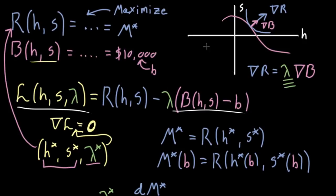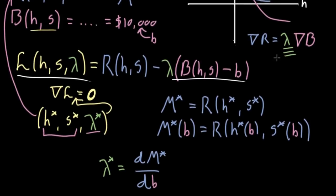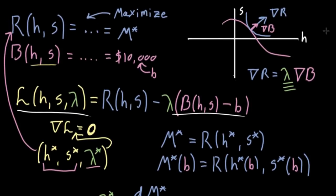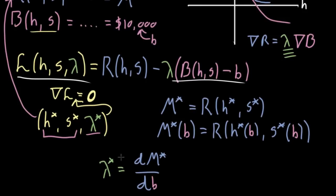That's all the usual setup. The crazy fact I declared is that when you set this gradient equal to zero and find a solution — three variables: h*, s*, and lambda* — that lambda* is not meaningless. It's not just a proportionality constant between gradient vectors, but it actually tells you how much the maximum possible revenue changes as a function of your budget.